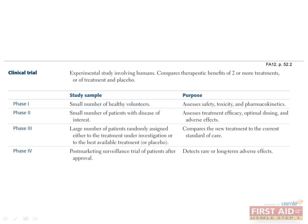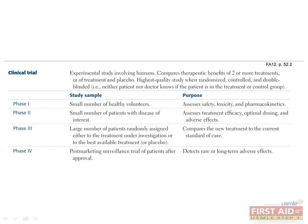Clinical trials are simply experimental studies involving humans. They compare the therapeutic benefits of two or more treatments or of treatments versus placebo. The highest quality clinical trials would be randomized, controlled, double-blinded trials in which neither the patient nor the investigator know if the patient is in the treatment or control group. There are four phases of clinical trials, phase one through four. However, there are also phase zero trials, also called first-in-human or microdosing studies, where 10 to 15 healthy volunteers receive single subtherapeutic doses of the study drug to look at pharmacodynamics and kinetics to confirm in vitro and animal data.